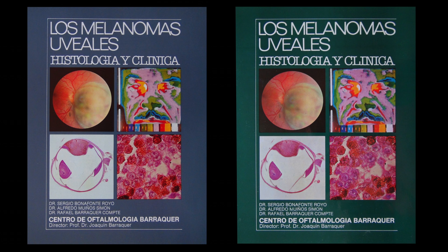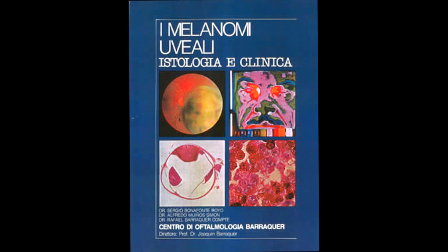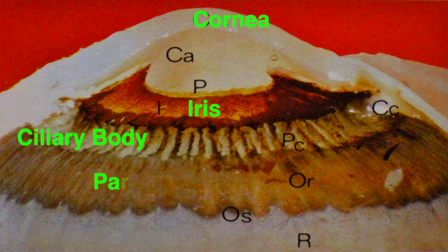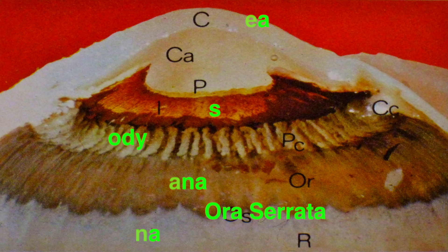Now we're going to see all of these structures in a real human eye in some of the pictures that Dr. Sergio Bonafonte made for one of his books called Los melanomas uveales, which had several editions in Spanish and was translated to Italian. In these pictures, we can see the cornea, iris, ciliary body, pars plana, retina, and in between them, the ora serrata.